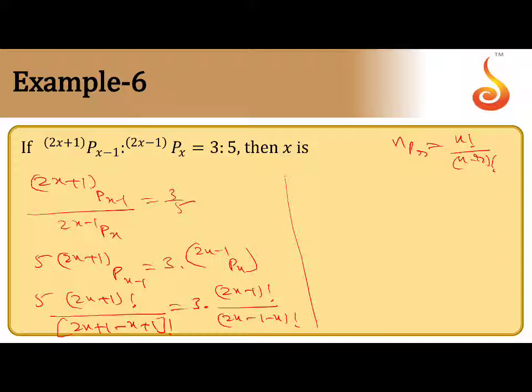We have to simplify: 5 into 2x plus 1 factorial divided by 2x minus x, which is x plus 2 factorial. On the right side, 3 into 2x minus 1 factorial by 2x minus x, which is x minus 1 factorial. The denominator is x minus 1 factorial.